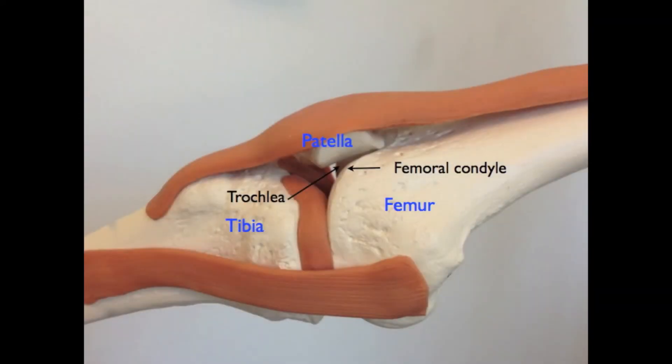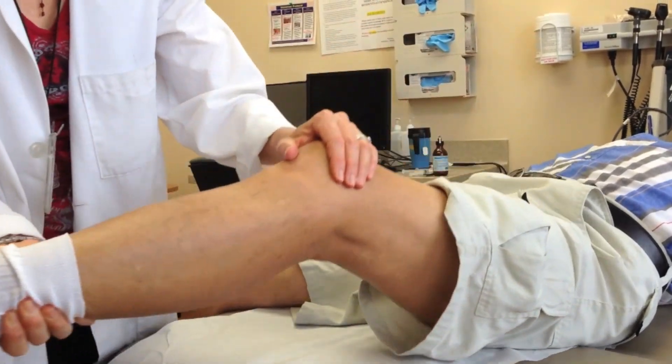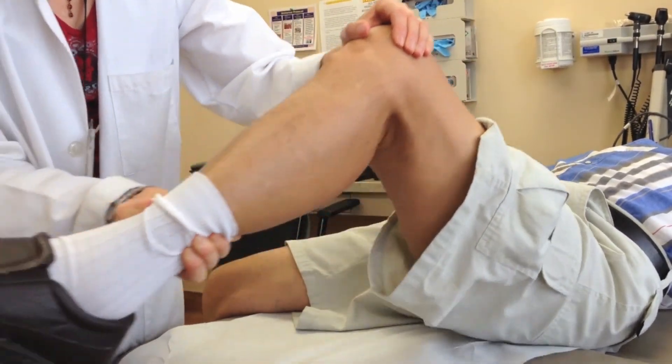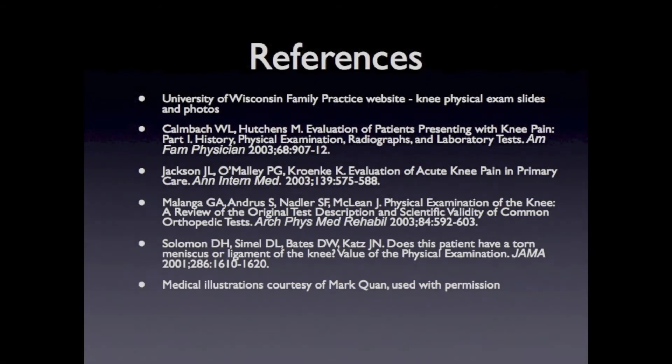Also important in knee motion is the relationship of the patella to the femoral condyles. The patella is housed within the quadriceps tendon and glides smoothly along the femoral trochlea. When abnormal mechanics arise, the patella can be misaligned and glide laterally over the lateral femoral condyle. This causes a painful condition called patellofemoral syndrome.